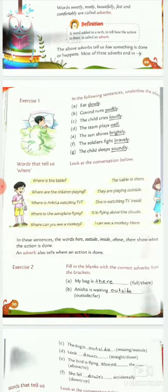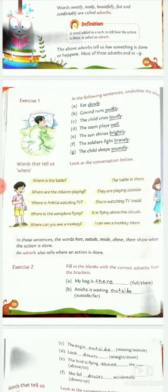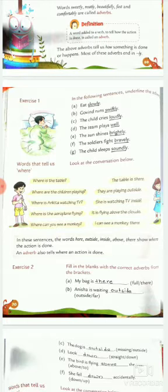Some words tell us where. Look at the conversation below. Where is the table? The table is there. Where are the children playing? They are playing outside. Where is Ankita watching TV? She is watching TV inside. Where is the aeroplane flying? It is flying above the clouds. Where can you see a monkey? I can see a monkey there. So the words here, outside, inside, above, and there show where the action is done. An adverb also tells where an action is done.